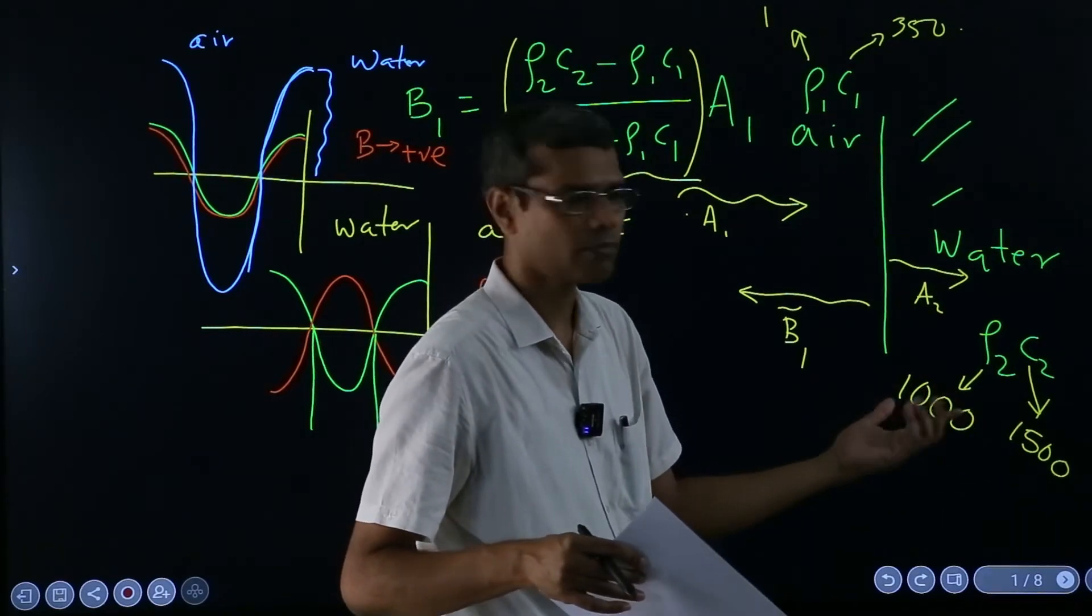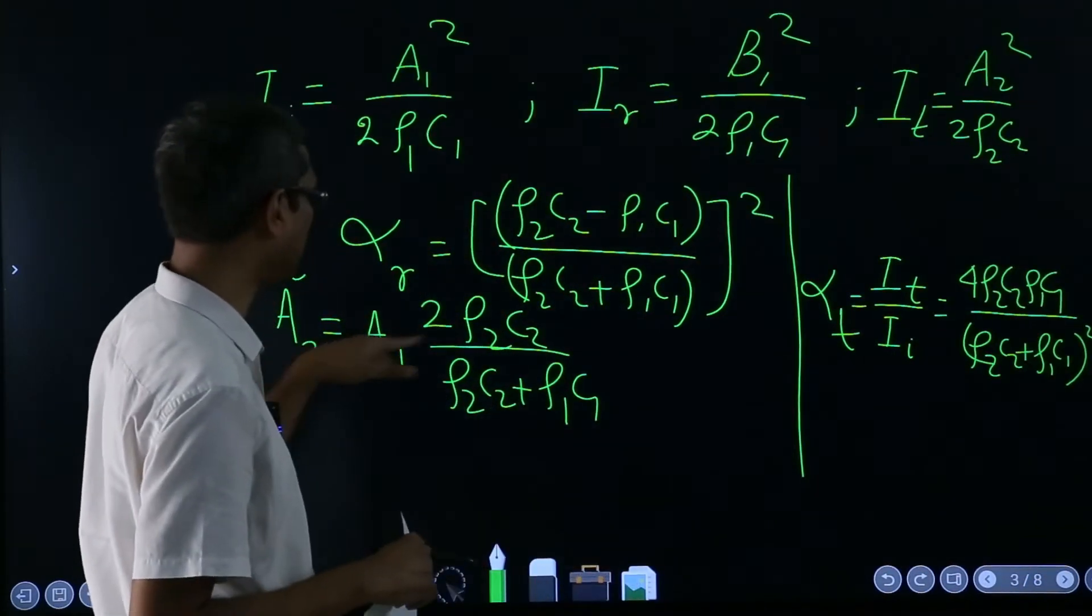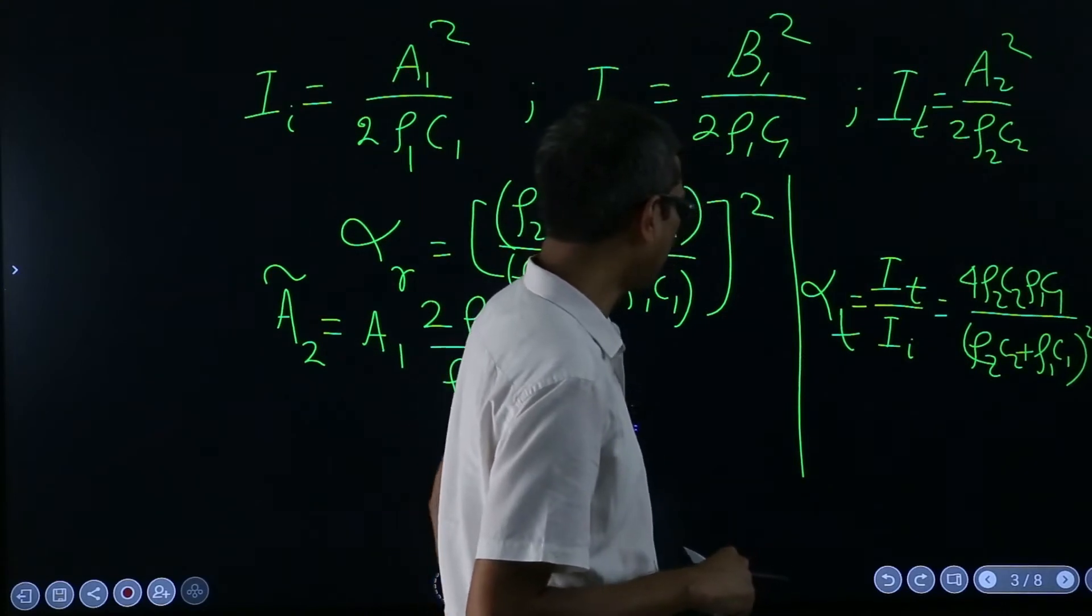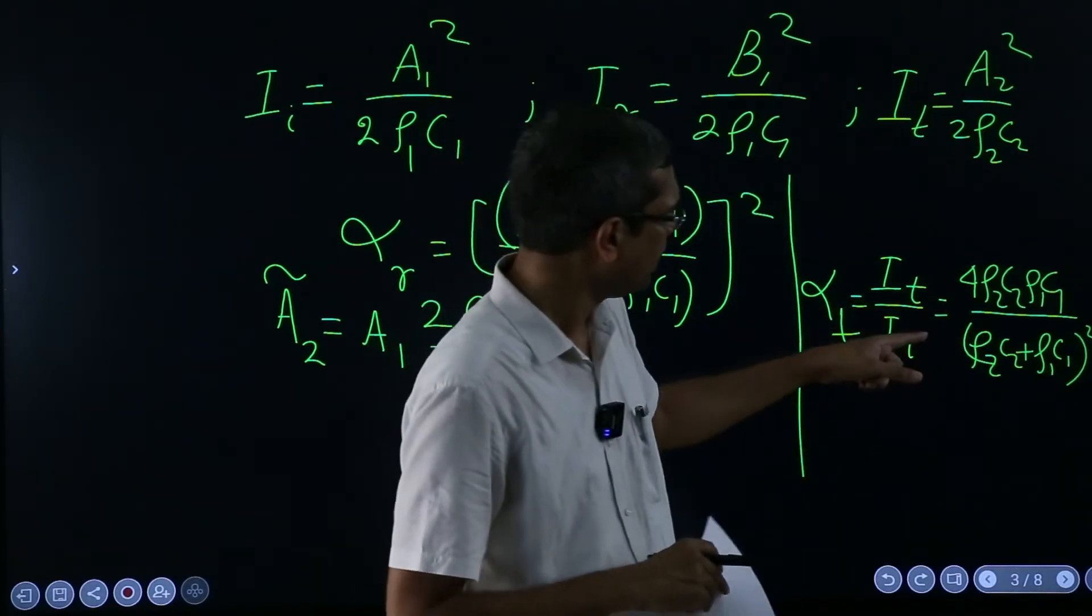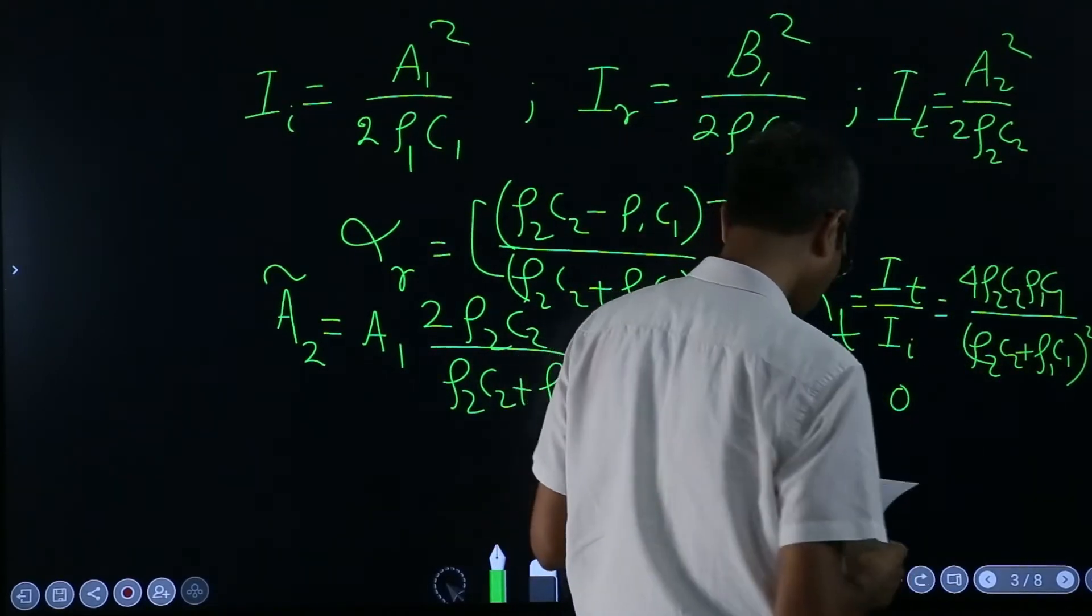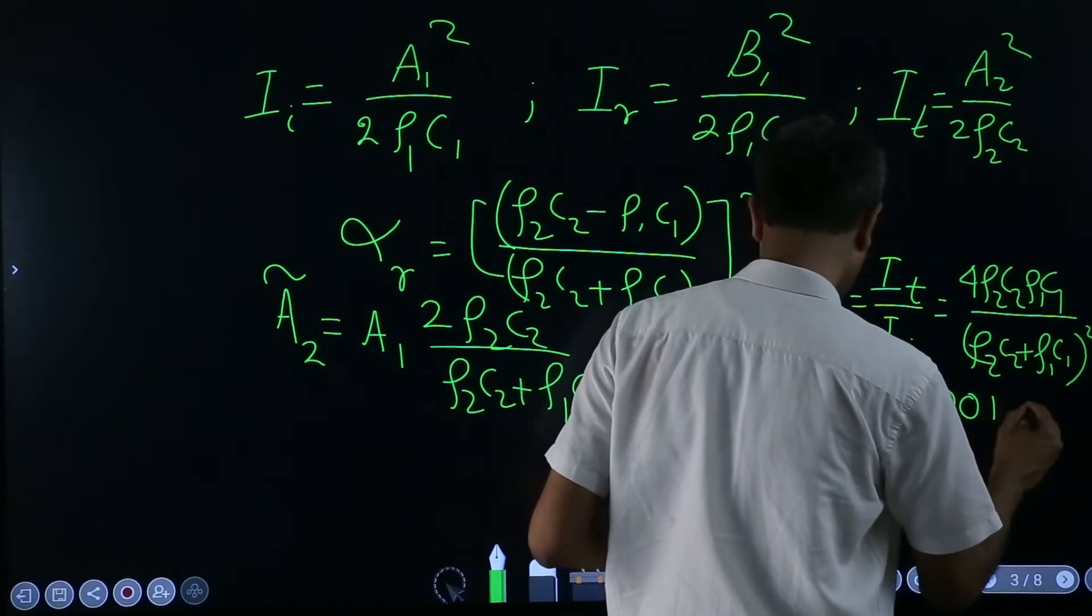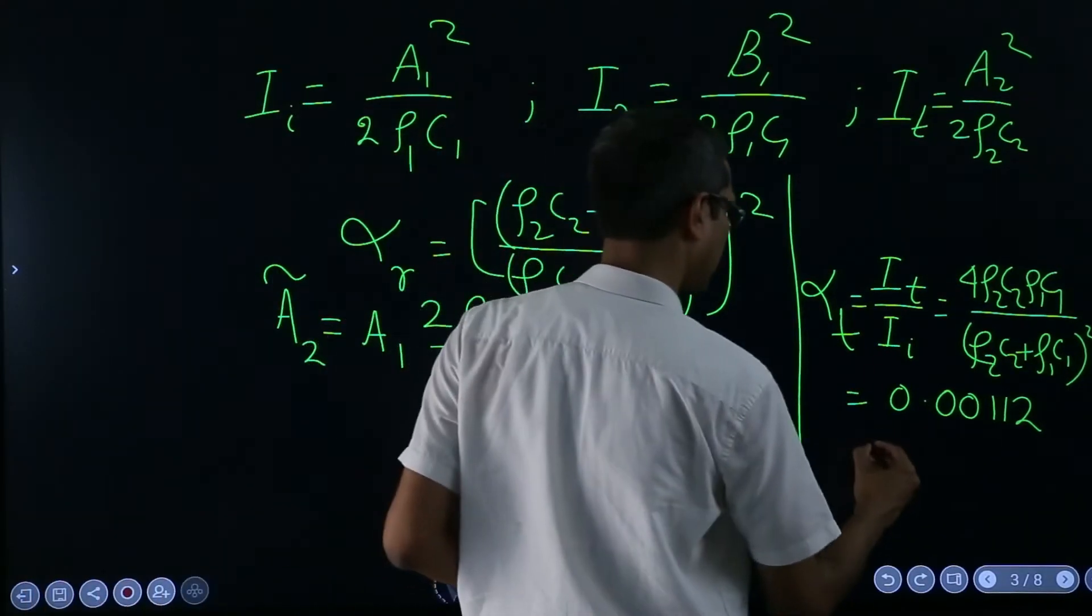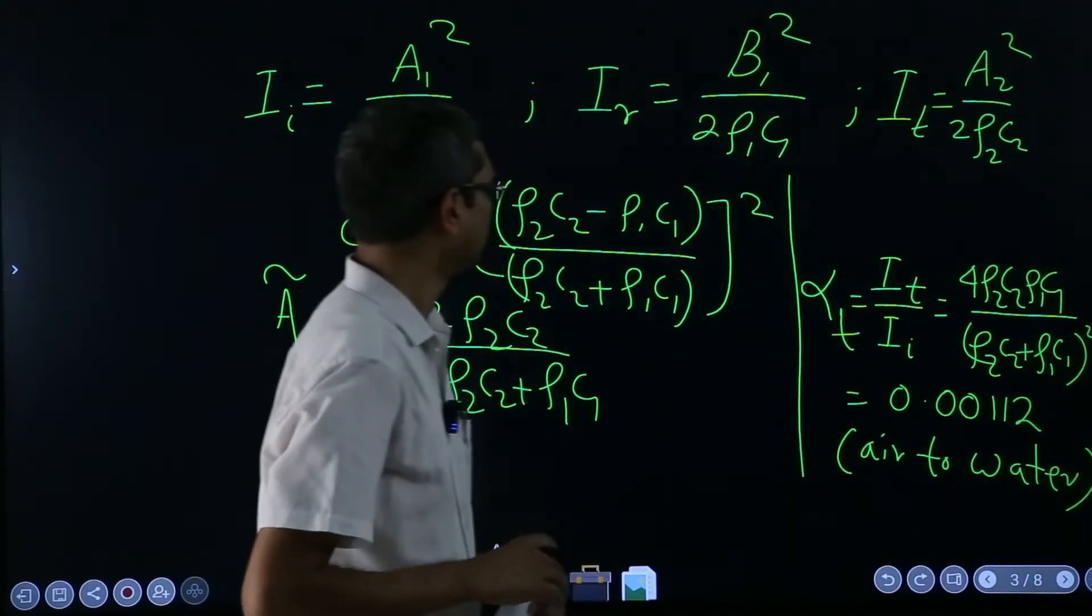So there is no way out, so its amplitude, that is why it is coming out to be that 2 times in the limit of a₁. But then if you see here, let us take the example of water and air, and if you put the values, so that is what I have told you to do. So here you will get, I think, what is the value, 0.00112 for air to water transmission.